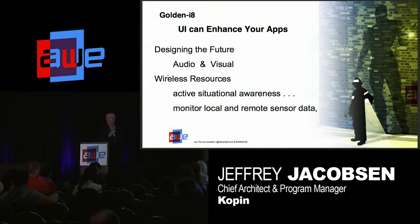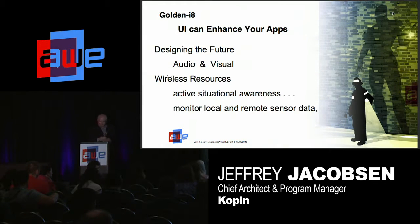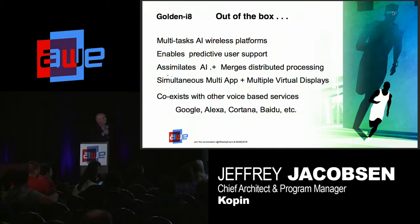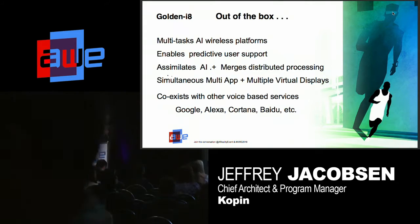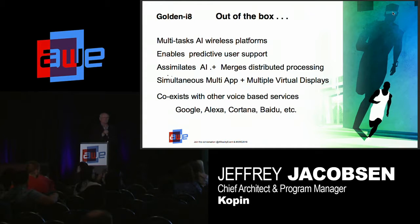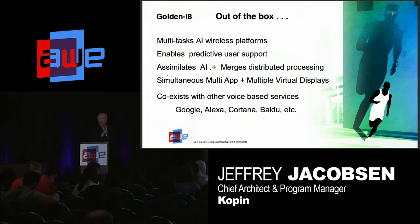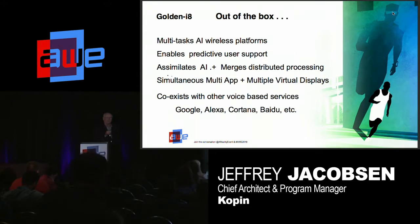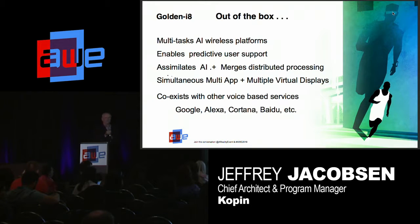You want to be able to actively monitor your situational awareness. You want to monitor local and remote sensor data, whether it be with the tools and headset that you're using or in the ambient environment you're working in. Out of the box, this UI multi-tasks AI wireless platforms. You designate the types of AI platforms you're interested in using, and it will monitor those based on your geographical location, as well as their availability and signal strength. It enables predictive user support, assimilates AI, and merges distributed processing. When you're using this user interface, you don't know where the service is necessarily coming from — in the case of filling out a simple form, I didn't have to pull out a keyboard or spell everything out one letter or numeral at a time.